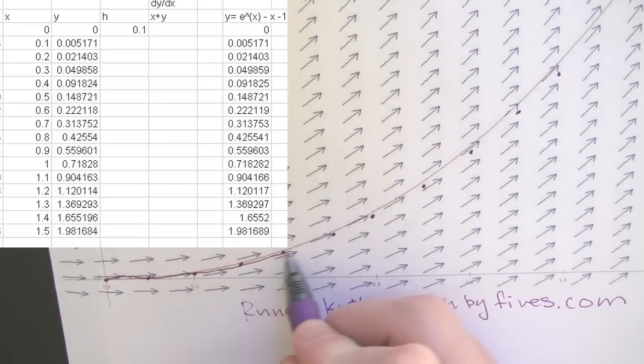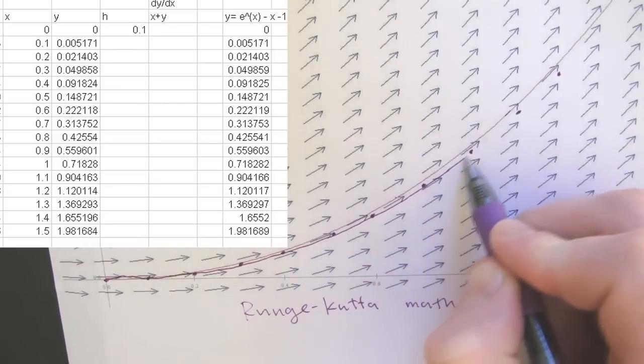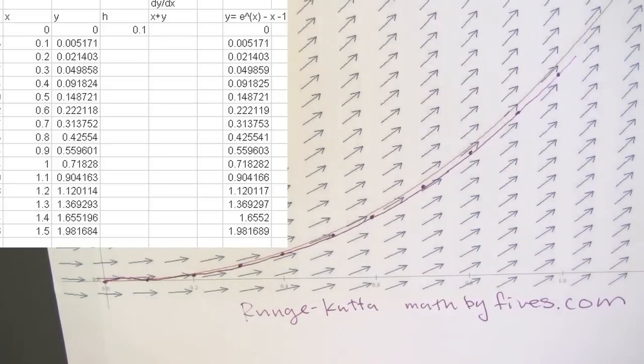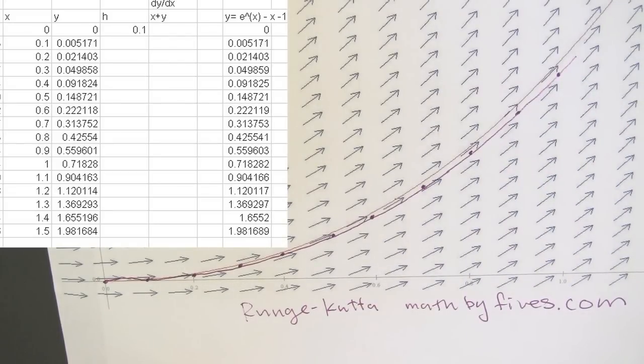It looks like it's getting a lot better. Look at that. So what is written there? The computer solution. And now our approximated solution using the Runge-Kutta method. Looks like it holds pretty close to that line.